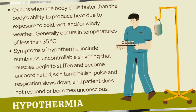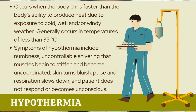The opposite of hyperthermia is hypothermia. Hypothermia occurs when the body chills faster than it can produce heat due to exposure to cold, wet, or windy weather. Not taking enough energy-producing food and not having proper clothing speeds up hypothermia. It generally occurs at temperatures below 35 degrees Celsius. Symptoms include numbness, uncontrollable shivering, muscles beginning to stiffen and become uncoordinated, skin turning bluish, pulse and respiration slowing down, and the patient becoming unconscious.